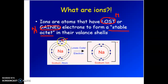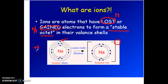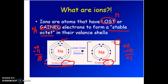Sodium is in group one, so it has one valence electron. What happens is it will lose that electron and expose the full shell underneath. When it becomes an ion, it will have a positive one charge. Regular sodium atoms have 11 protons and 11 electrons, making it neutral. But when it has lost an electron, it has 11 protons and only 10 electrons — that's where the positive one charge comes from. We no longer call it an atom; it's an ion. The word atom means protons equal electrons; the word ion means they are not equal.